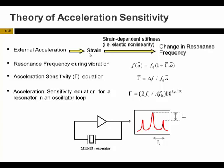In this schematic you can see that when we employ the resonator in an oscillator loop, two sidebands are generated at an offset frequency equal to the vibration frequency FV from the resonance frequency. In this equation, LV is the difference between the sidebands and the carrier.